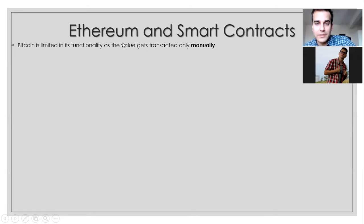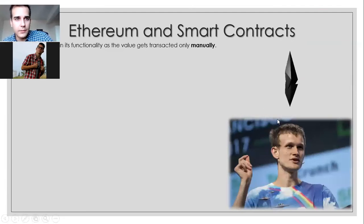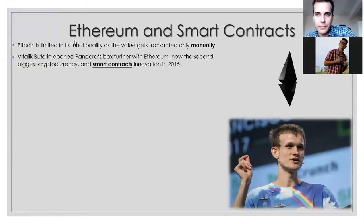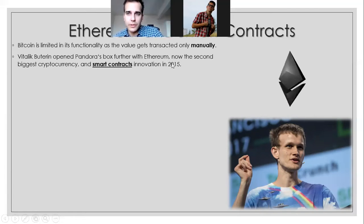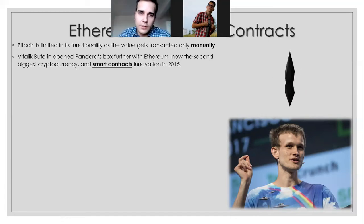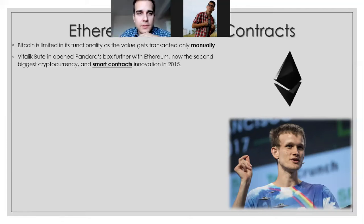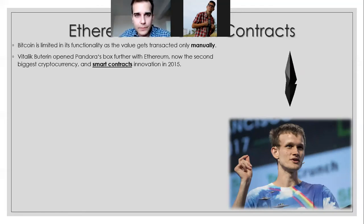We are going to start with the second biggest cryptocurrency called Ethereum, because Ethereum really opened up the world of opportunities in the blockchain space. This is the guy who created Ethereum — his name is Vitalik Buterin, a Russian programmer. He was very young when he came up with this. What he basically did, he opened Pandora's box further with Ethereum. He took the code of Bitcoin and innovated it so that money can be programmed.